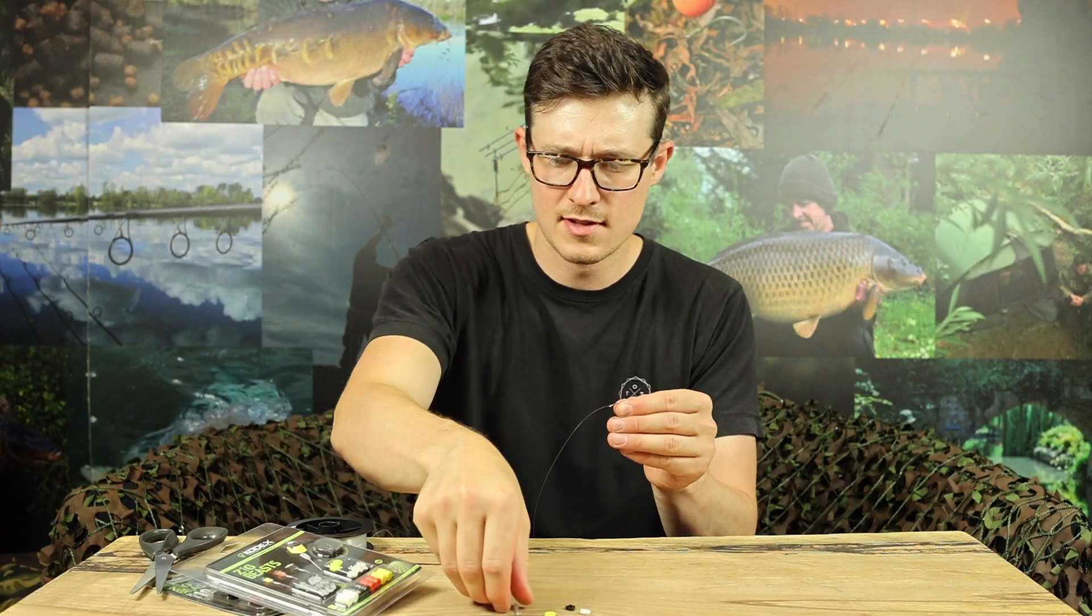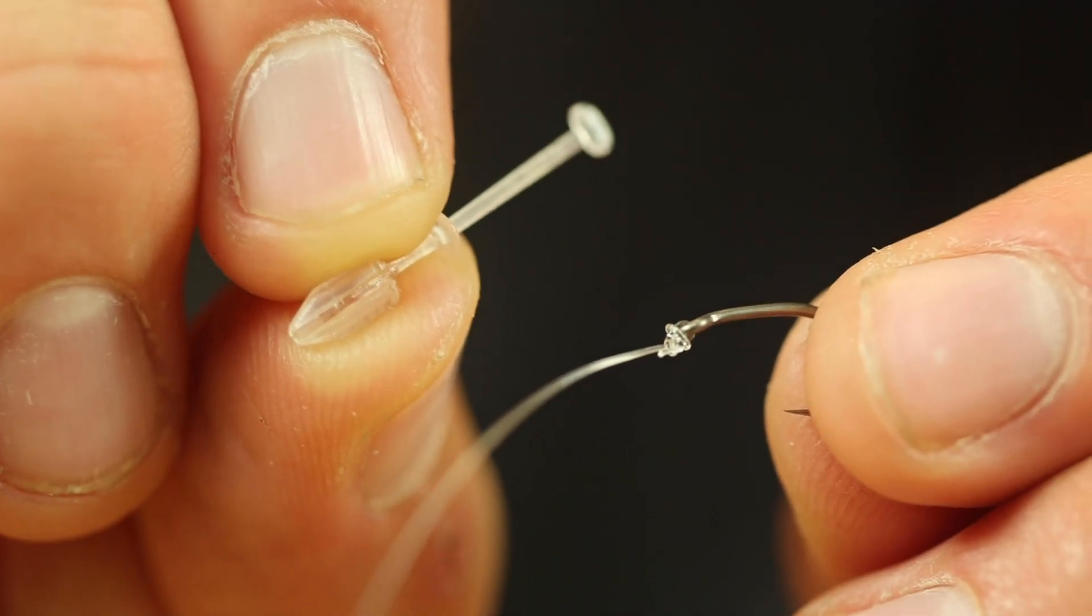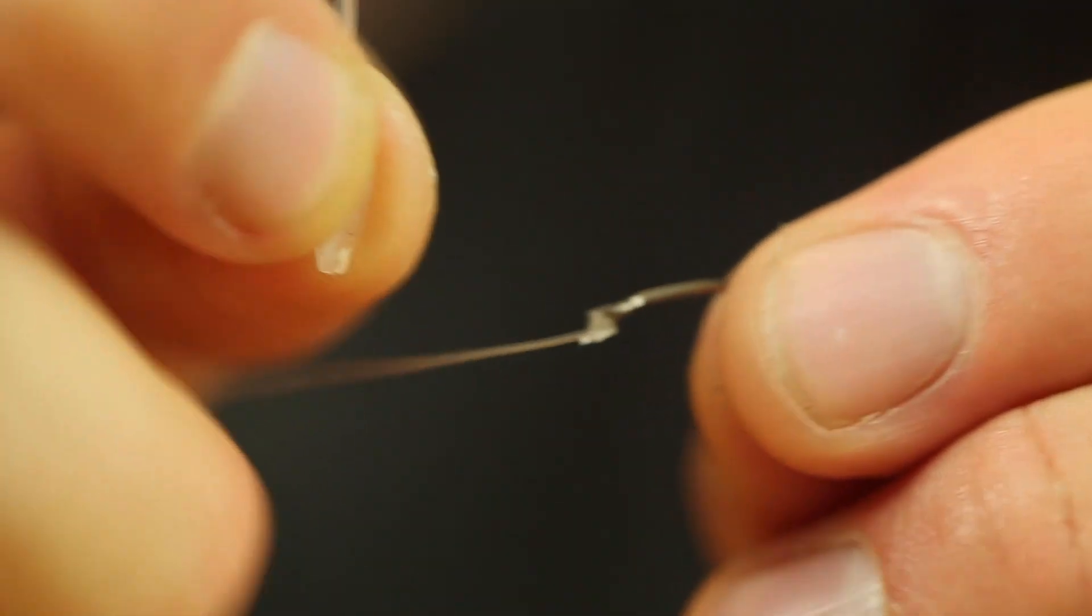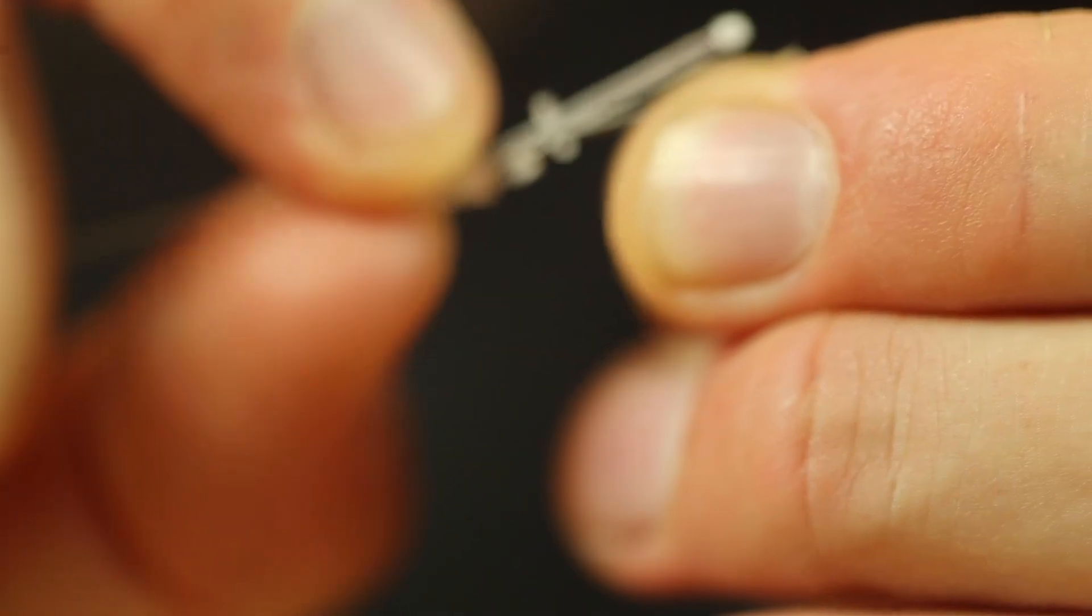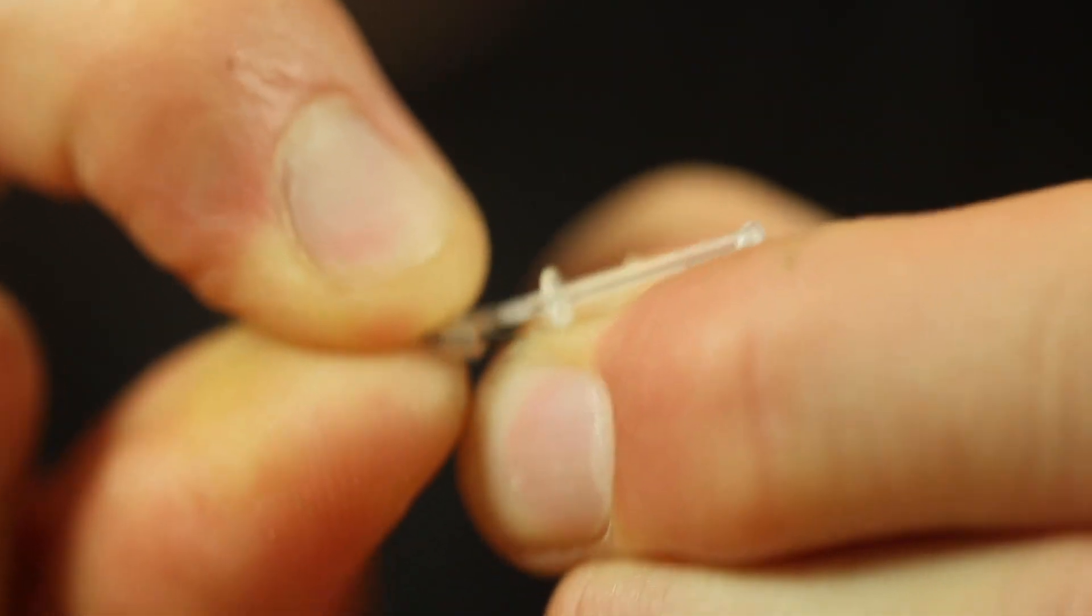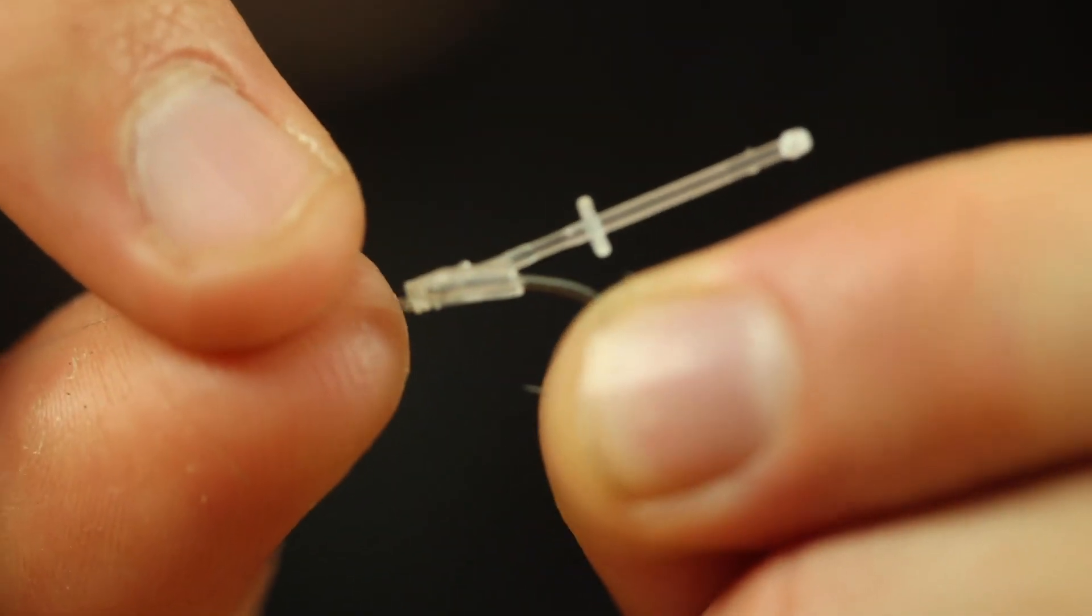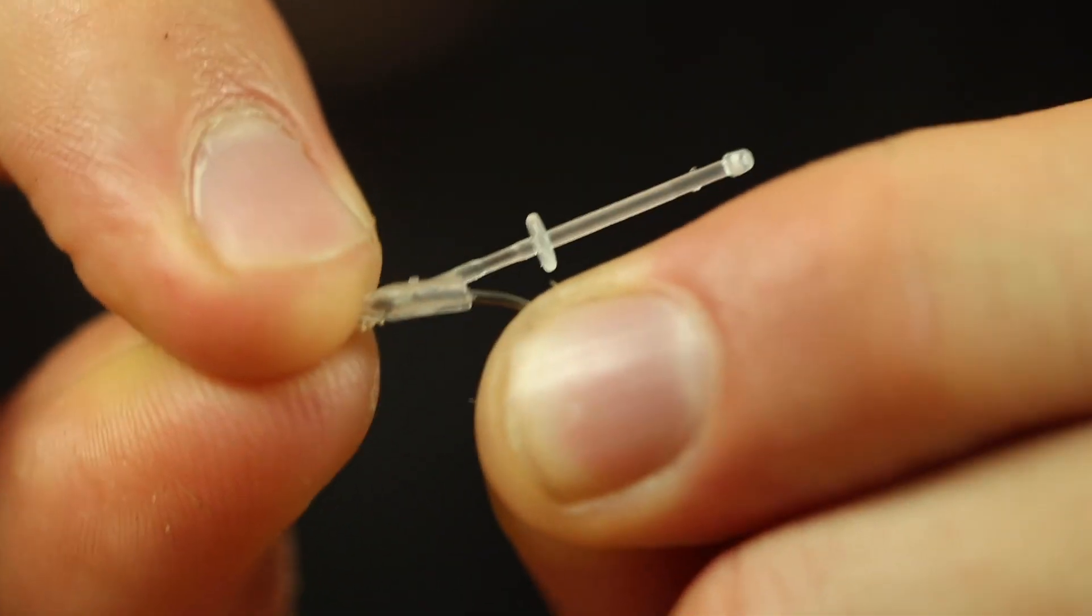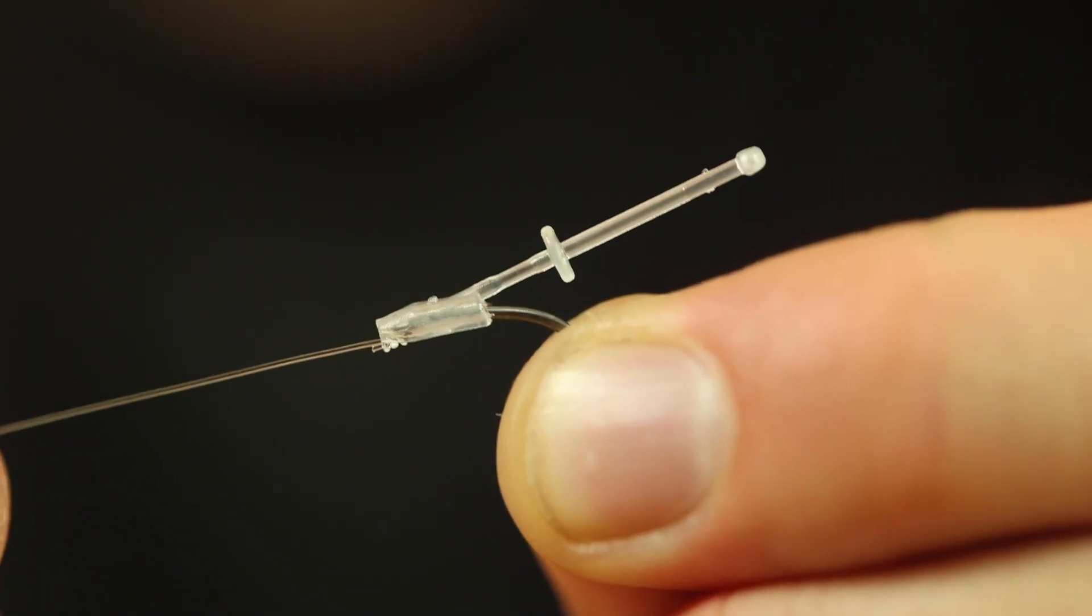Now the next job is to take the little stem that comes with it and what you need to do here is you've got a small slit in the back of the stem. Just pass your line through that and push the stem up onto the eye of the hook. There you go.